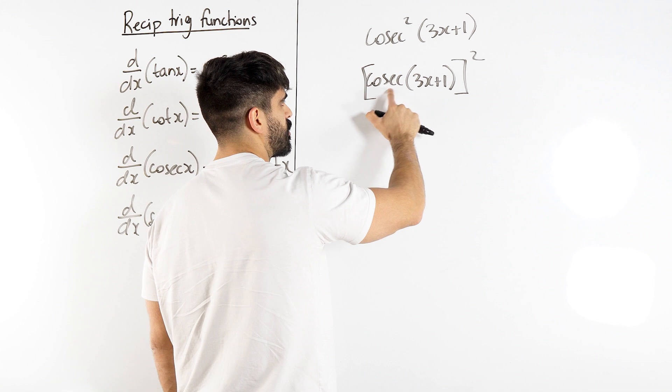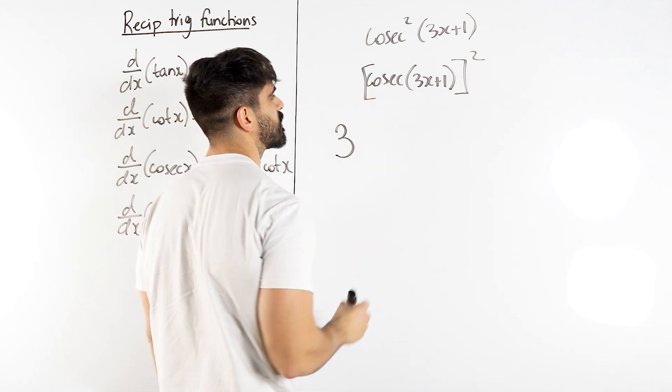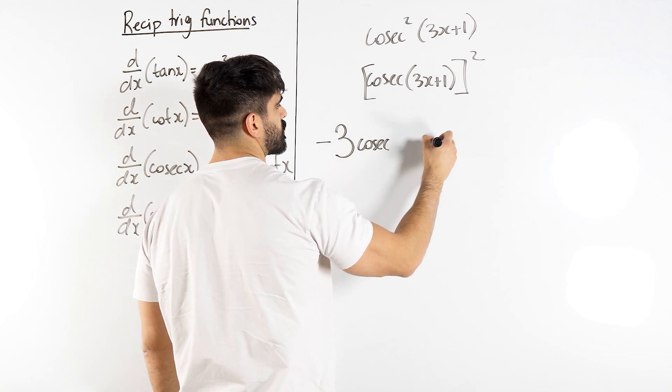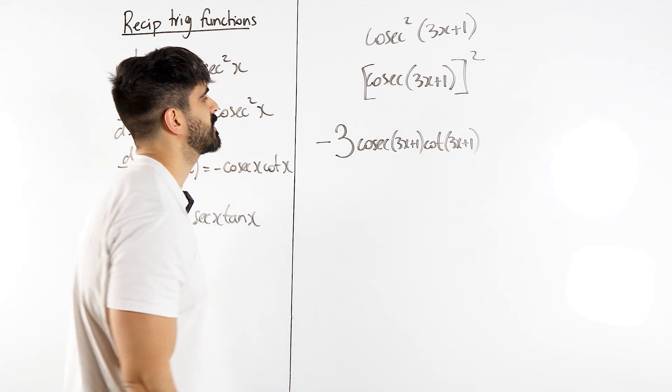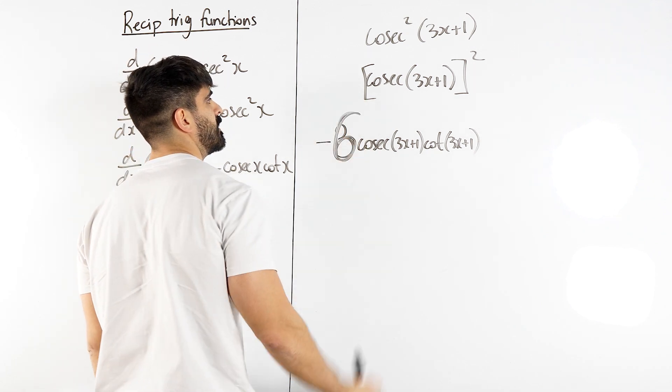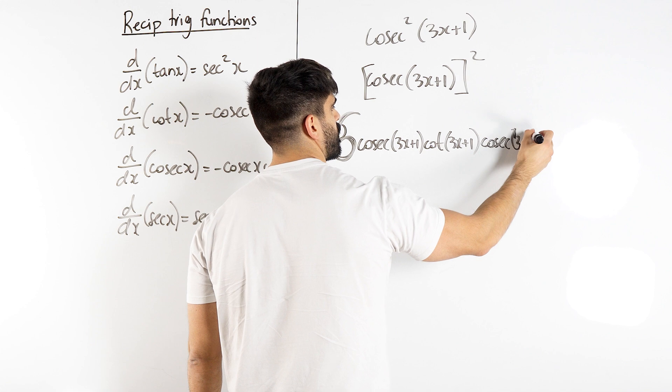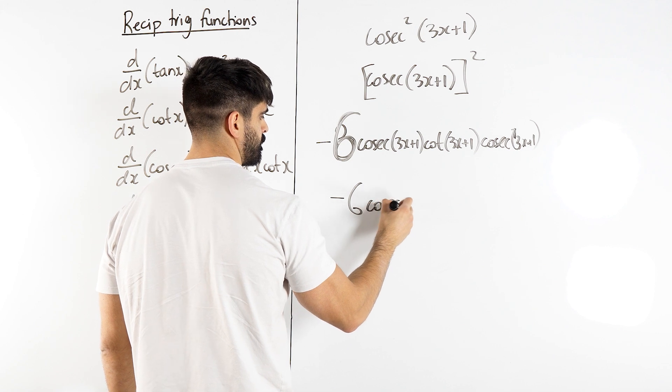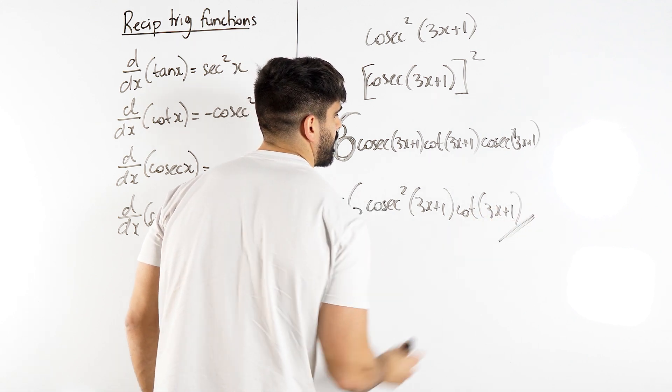If you want to differentiate cosec 3x plus 1, you differentiate the angle first. 3x plus 1 differentiates to 3. Then cosec goes to minus cosec cot, but the angle needs to remain the same. So that's the differential of what's on the inside. Then we bring down the 2, bringing down the 2 is going to make this a 6 because it's a power function. And then we knock one off the power which just gives us cosec 3x plus 1. These two combine to make squared. So you have minus 6 cosec squared 3x plus 1 times cot of 3x plus 1. That is our solution.